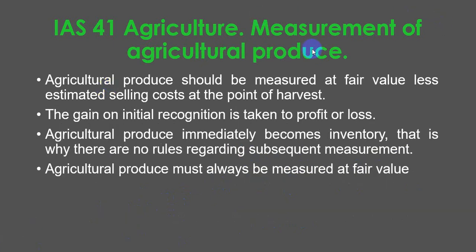Measurement of agricultural produce. Agricultural produce should be measured at fair value less estimated selling costs at the point of harvest. The gain on initial recognition is taken to profit or loss. Agricultural produce immediately becomes inventory, which is why there are no rules regarding subsequent measurement. Agricultural produce must always be measured at fair value.